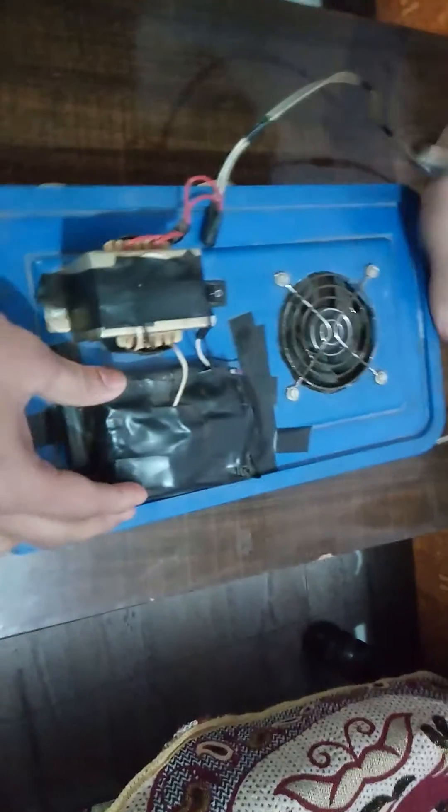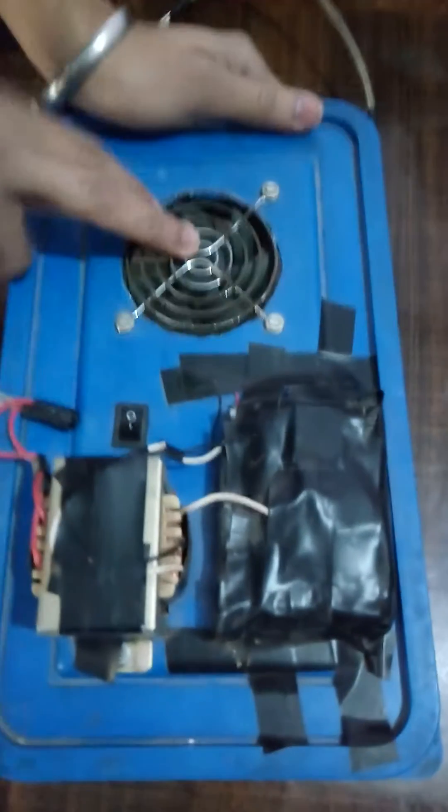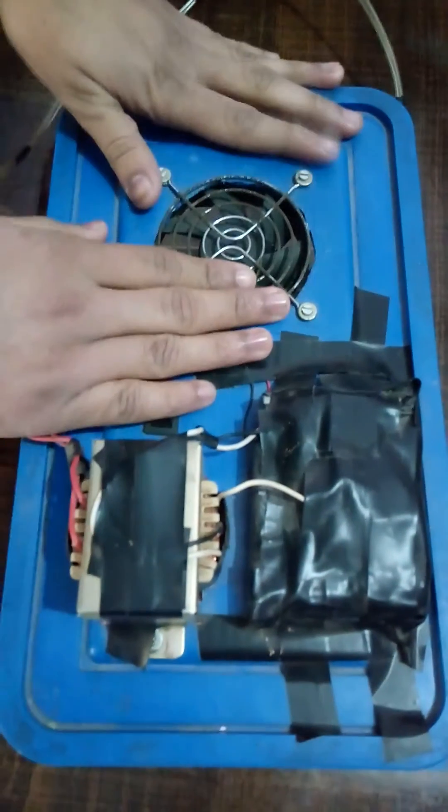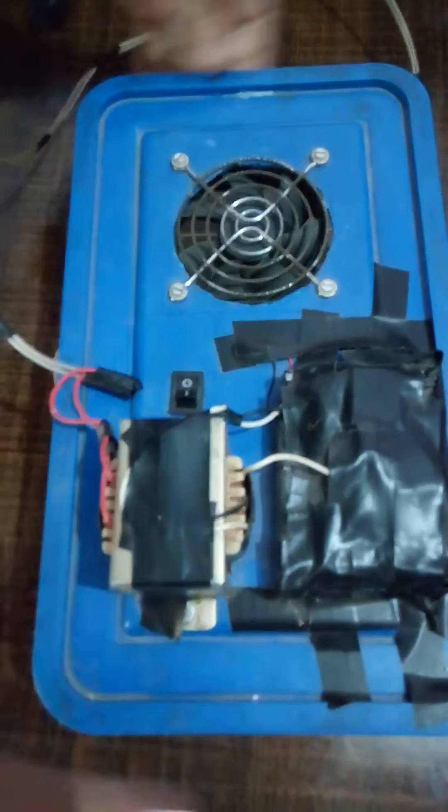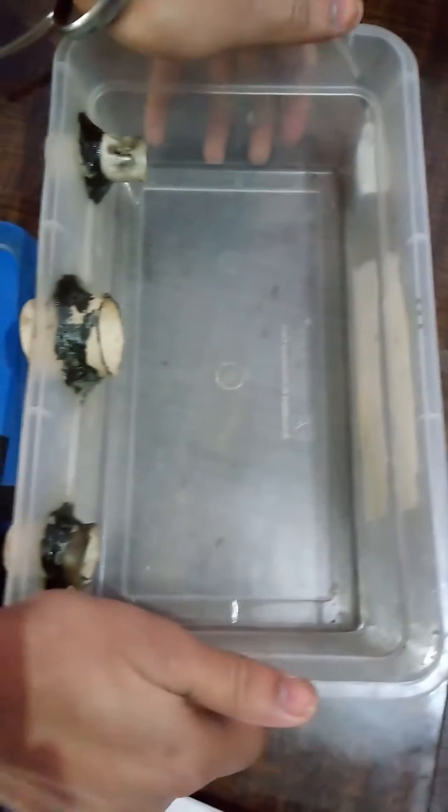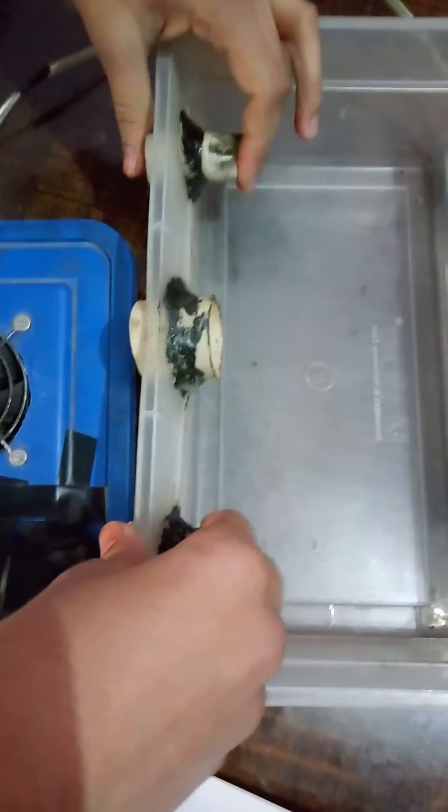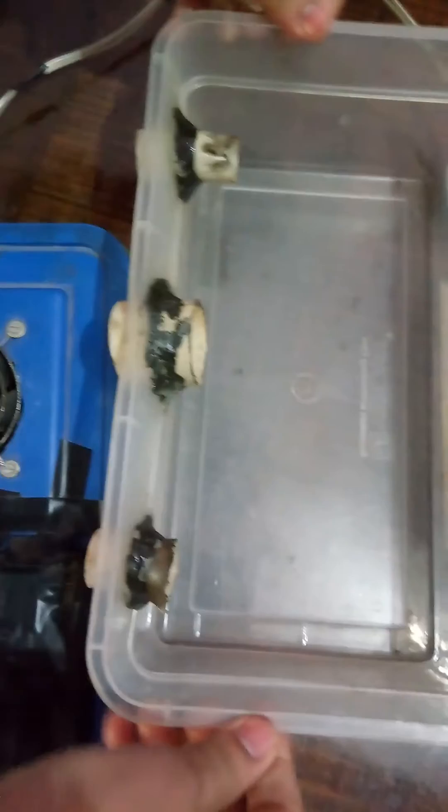Let me tell you how it works. We have a transformer, batteries, then a switch. This is our fan. You can take this fan from your old PC. Then we have a free space here where you can put your ice water. And these are the outputs where you will get your cold air.